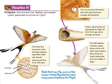The tiny structures formed by bone cells give the bones strength and flexibility. Hollow, dense bones are specialized for flight. Air from the lungs moves through the bones. The stiff skeleton of hollow, dense bones works with other body systems. Many bones are fused, making the bird more stable in flight.